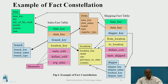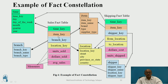In the fact constellation, the structure goes from smaller parts to higher parts — item key is divided into item key, item name, and so on. From both sides, the item key can be shown, meaning multiple fact tables share dimensional tables.